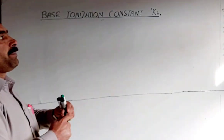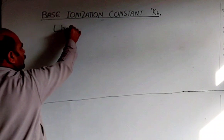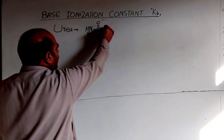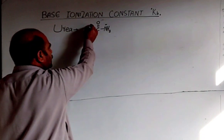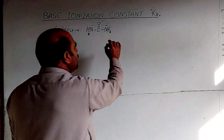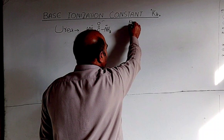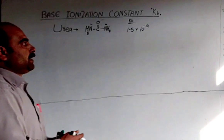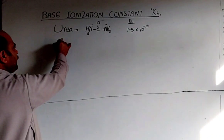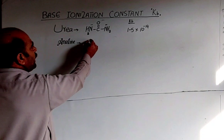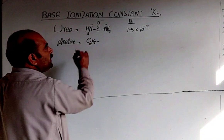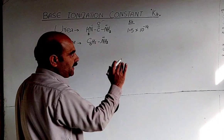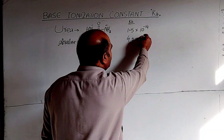Let us look at some examples. Urea (CH₄N₂O) has a nitrogen with a lone pair of electrons — it is a proton acceptor, so it is basic in nature. Its Kb value is 1.5 × 10⁻¹⁴. Another example is aniline, an organic base with the formula C₆H₅NH₂. Aniline's nitrogen also has a lone pair and accepts a proton, making it a base. Its Kb value is 4.2 × 10⁻¹⁰.